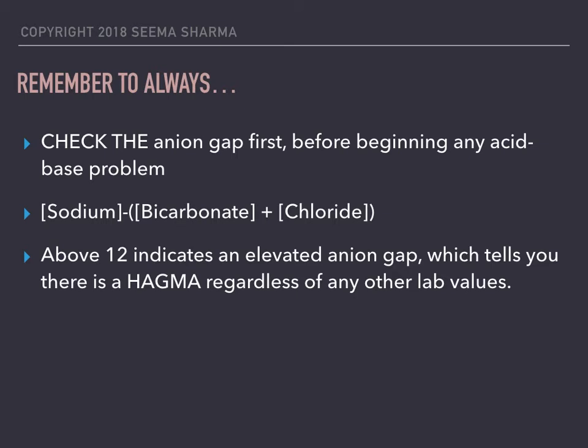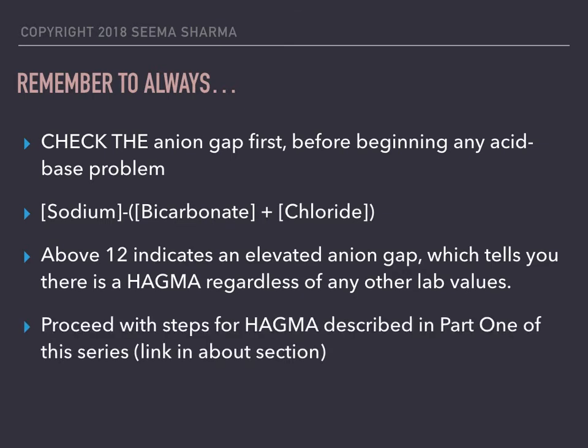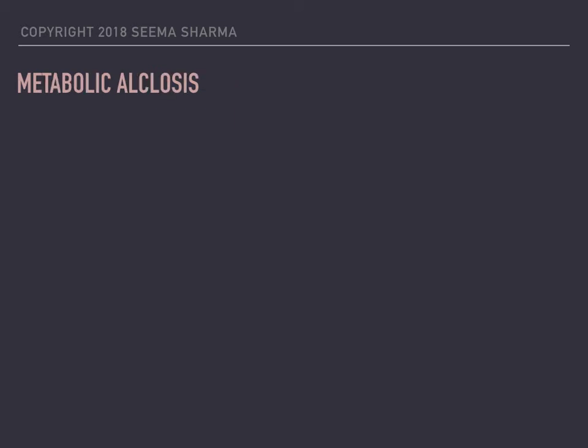So if there is a high anion gap metabolic acidosis, you're going to proceed with the steps for that that I've described in part one of the series — the link is below in the about section. So now on to metabolic alkalosis.